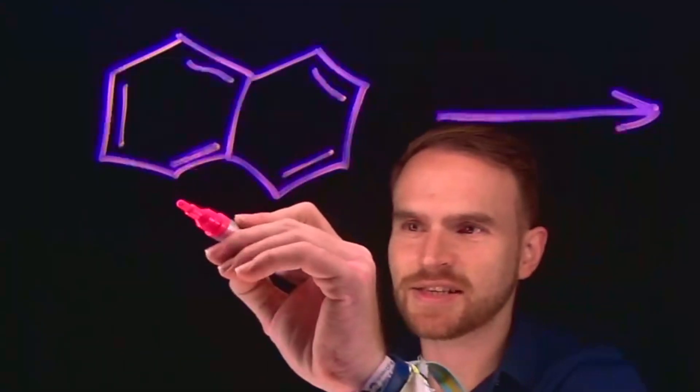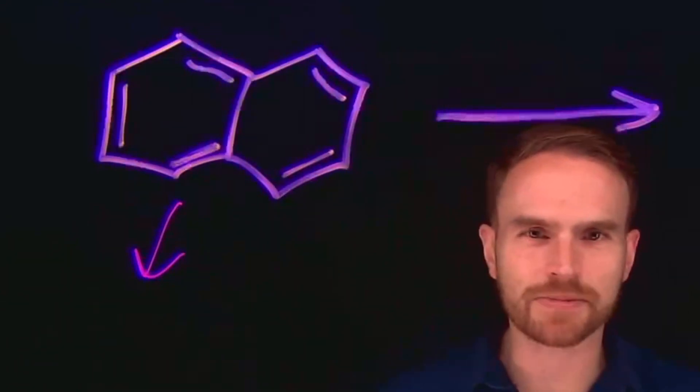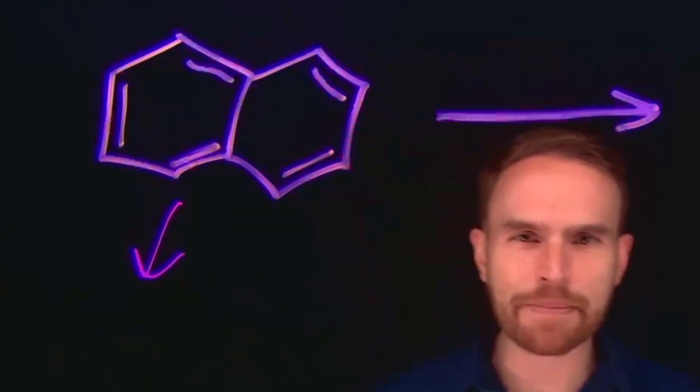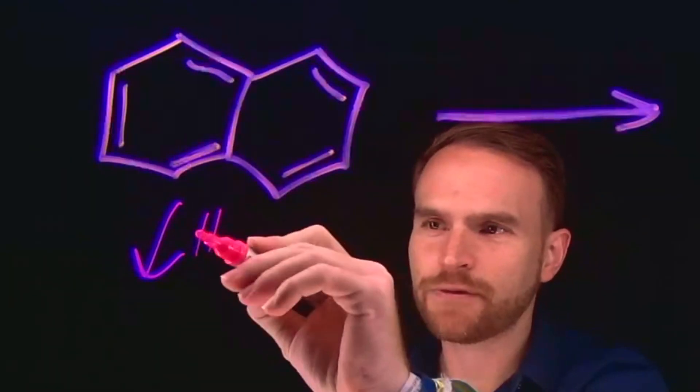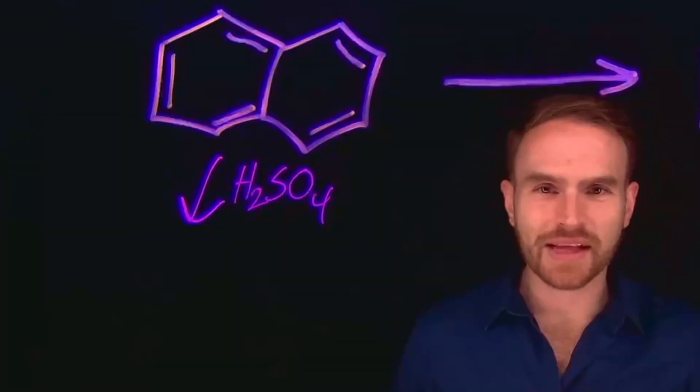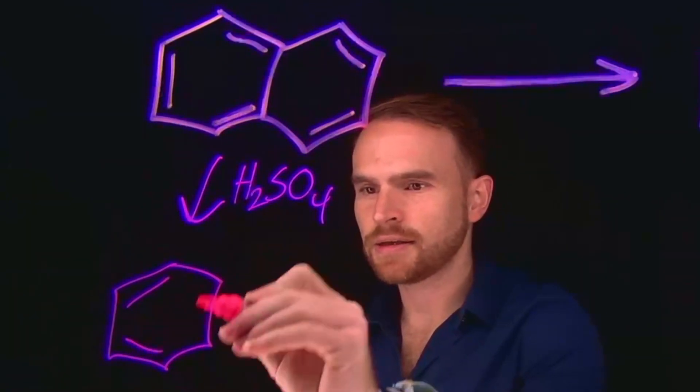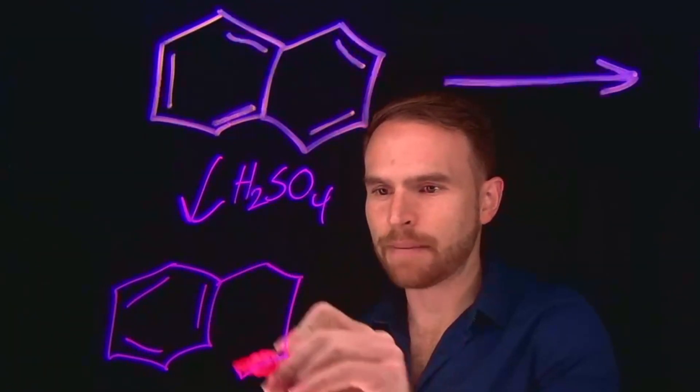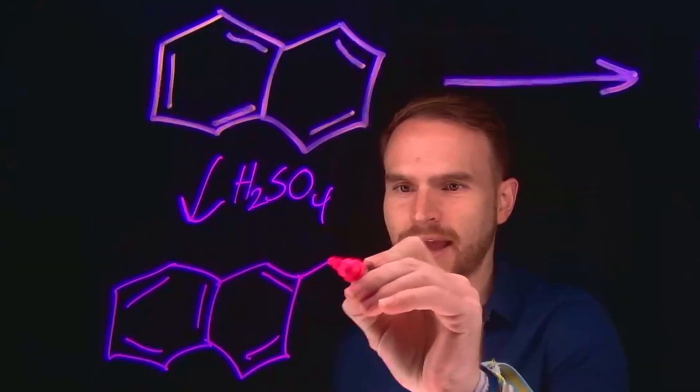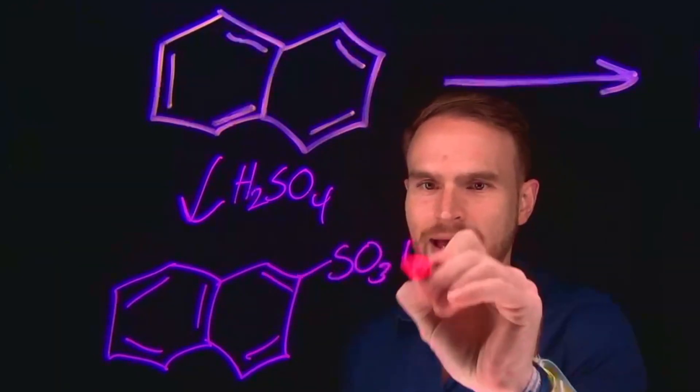The first step in the synthesis would be an electrophilic aromatic substitution to sulfonate the naphthalene. We can do that by adding fuming sulfuric acid or H2SO4, likely at elevated temperatures. This would allow us to sulfonate the second ring on naphthalene. So here we can add a sulfonate group at this position.